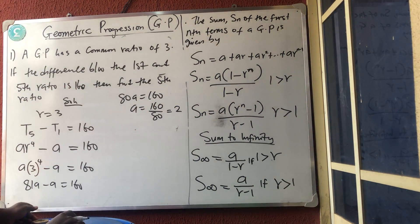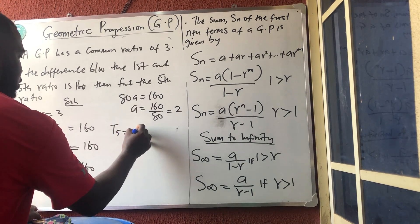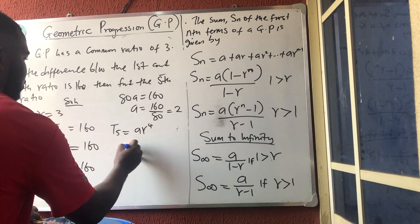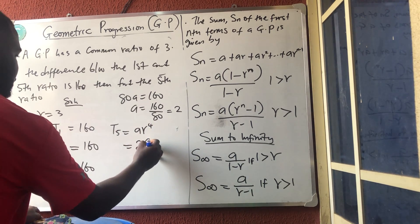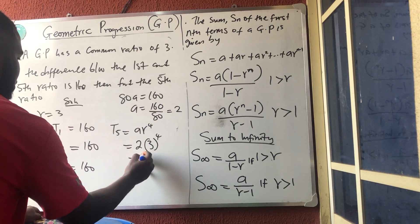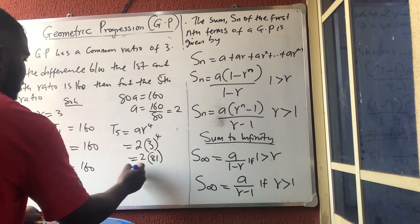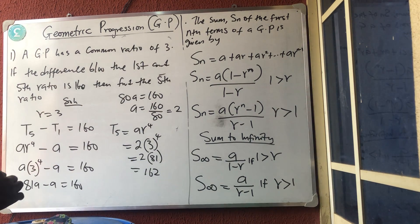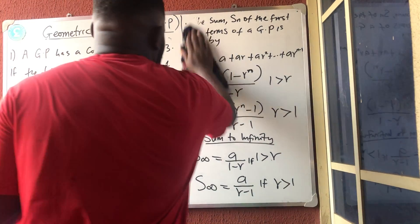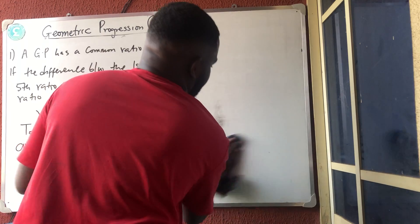Now finding T5: T5 = A × R^4 = 2 × 81 = 162. The fifth term is 162. As simple as that — once you know the formula, just substitute and you get your answer.